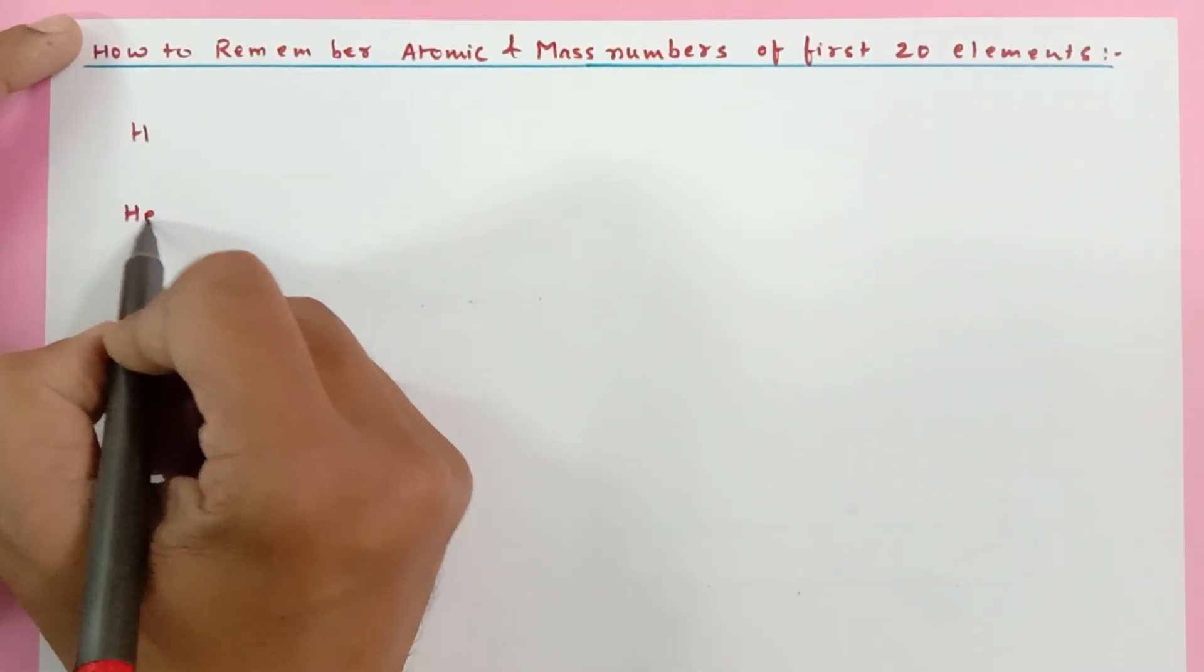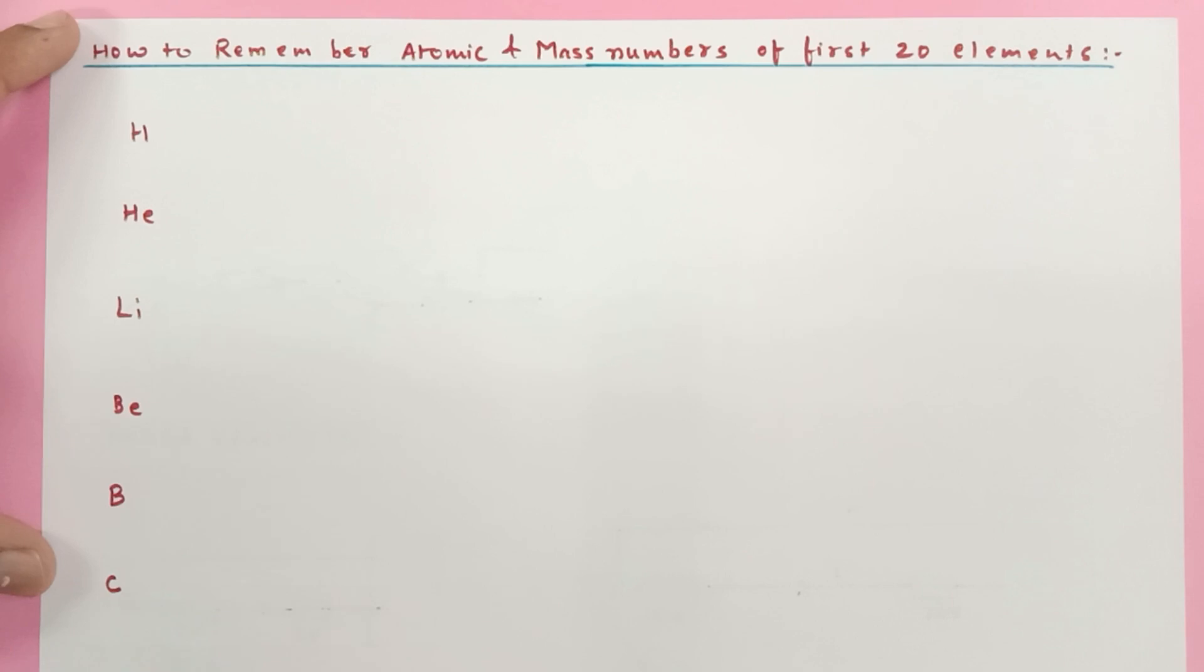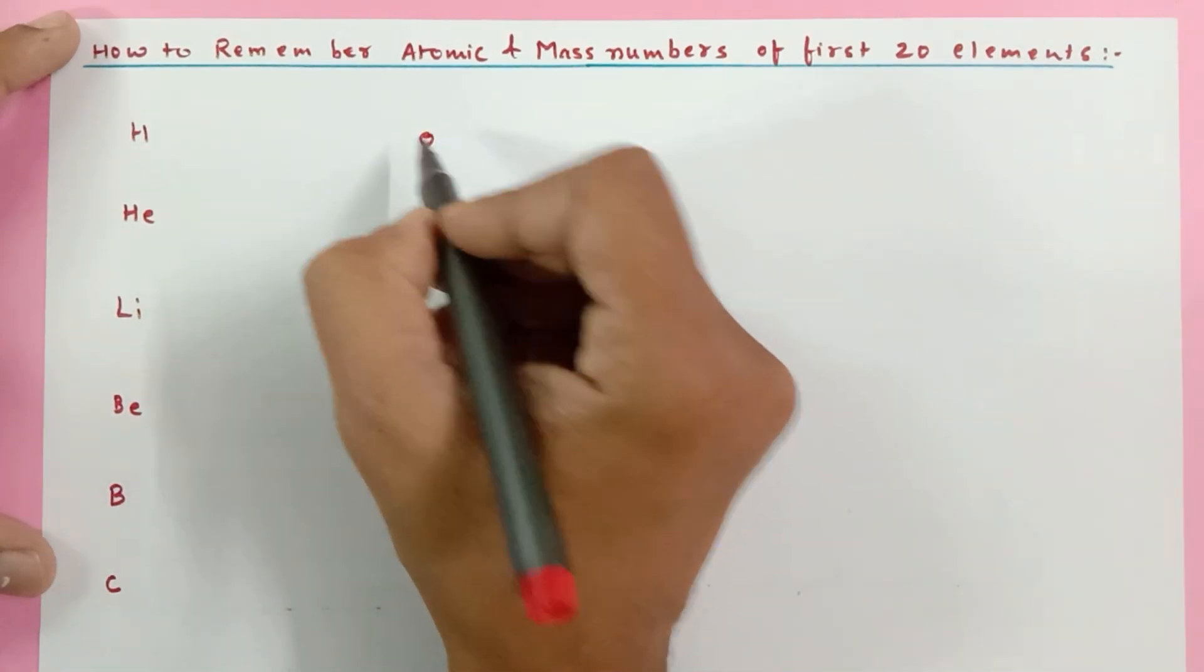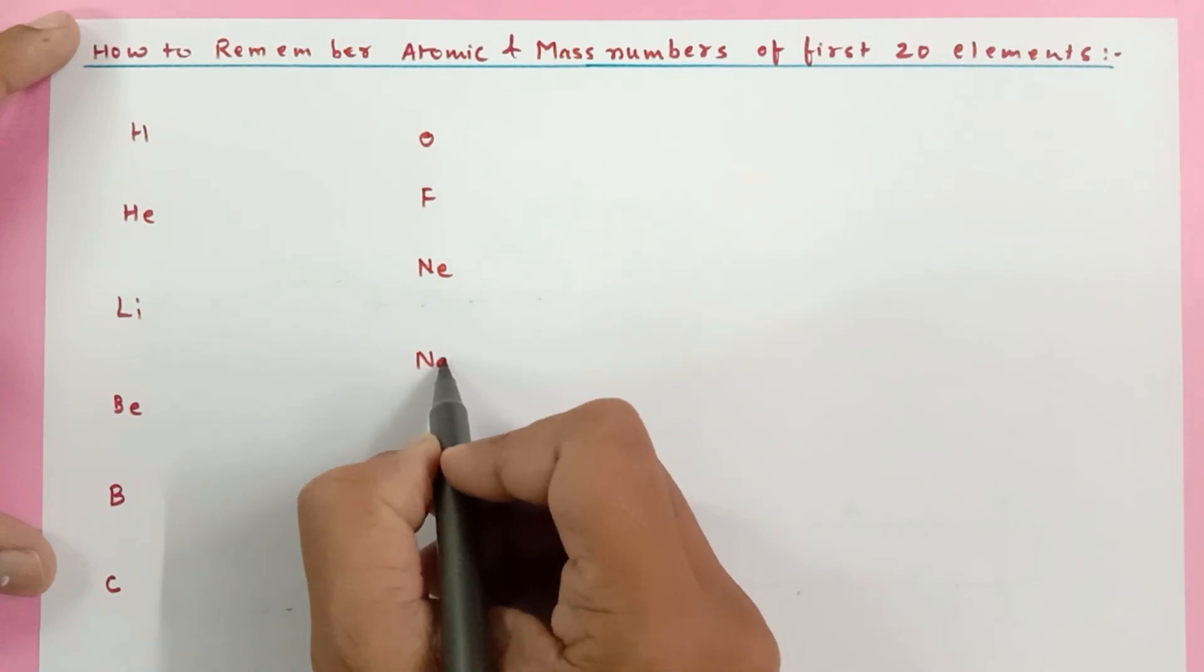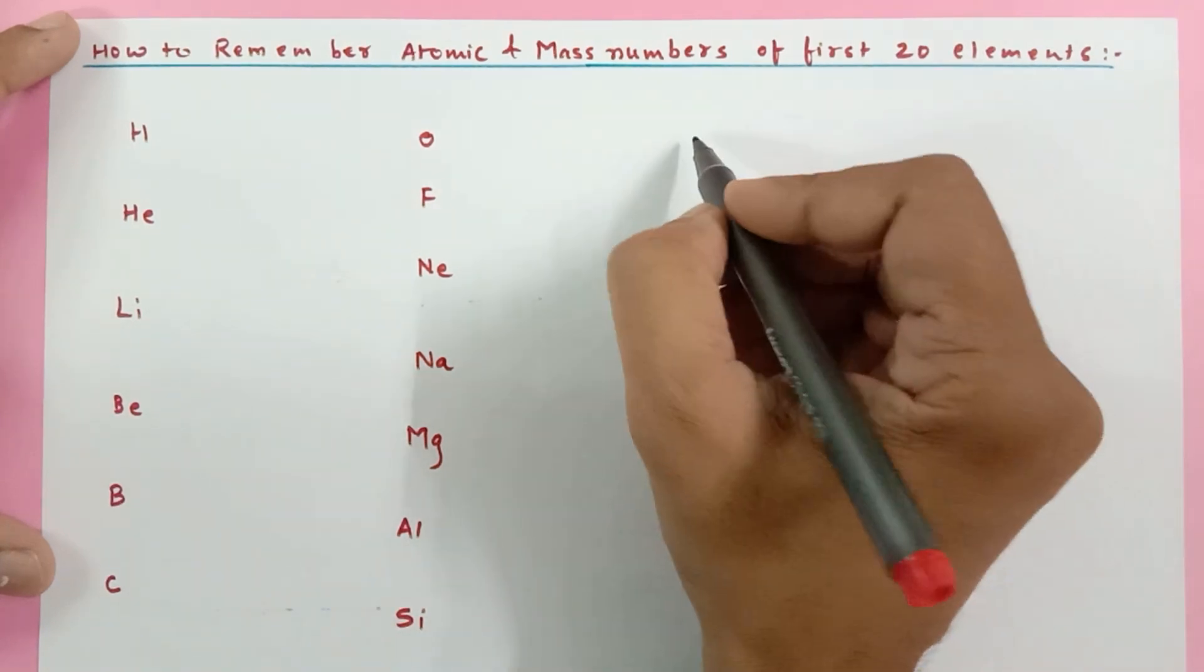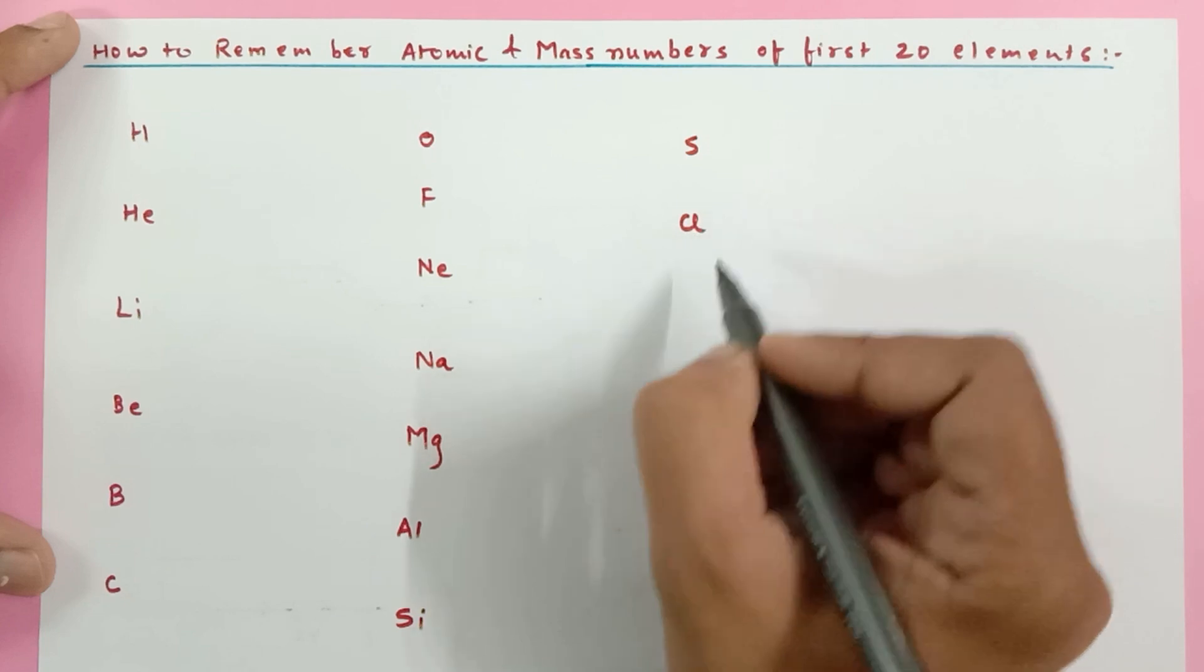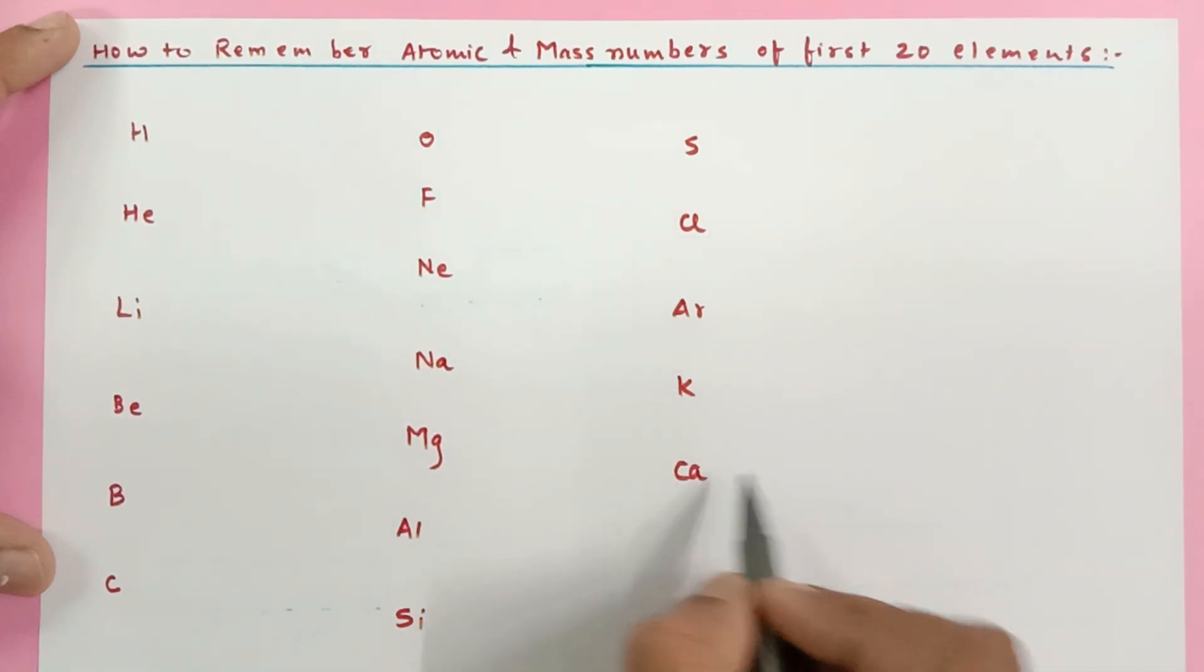Hydrogen, Helium, Lithium, Beryllium, Boron, Carbon, Nitrogen, Oxygen, Fluorine, Neon, Sodium, Magnesium, Aluminium, Silicon, Phosphorus, Sulphur, Chlorine, Argon, Potassium, Calcium.